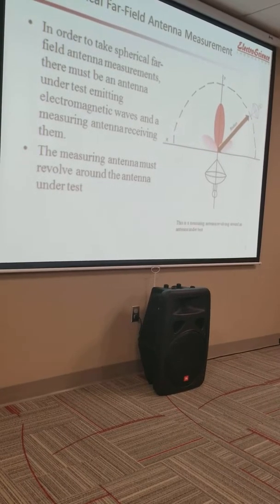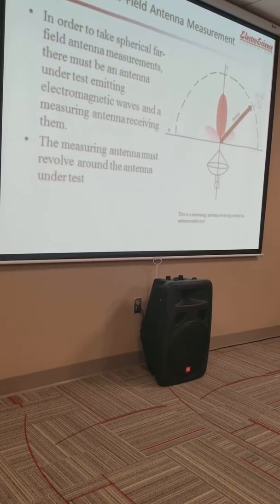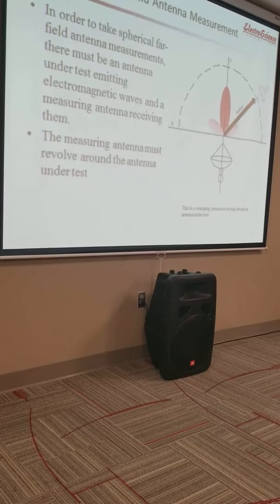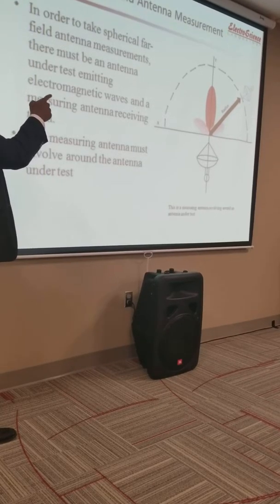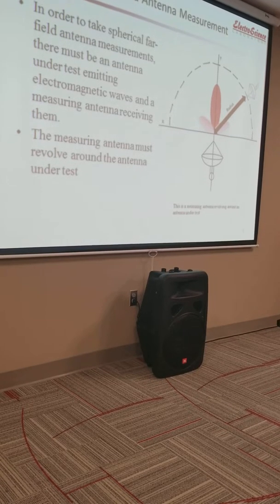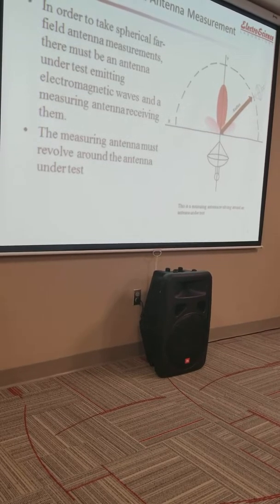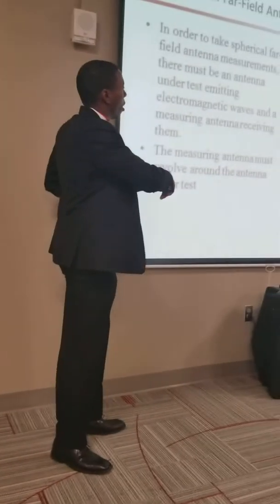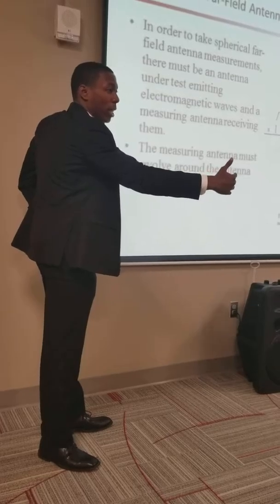The key takeaway from spherical far-field antenna measurement is that the measuring antenna must revolve completely around the antenna under test, and while revolving it must also rotate 90 degrees when done. This is because the electromagnetic lobes are actually three-dimensional, and we need to capture all different angles. By using the spherical method and going through a complete sphere, we can analyze all parts of the lobe — the frontal lobe, the side lobes, and all the way to the bottom.